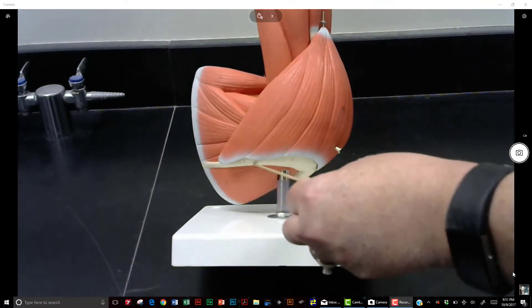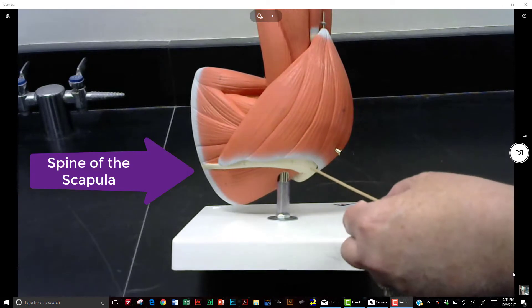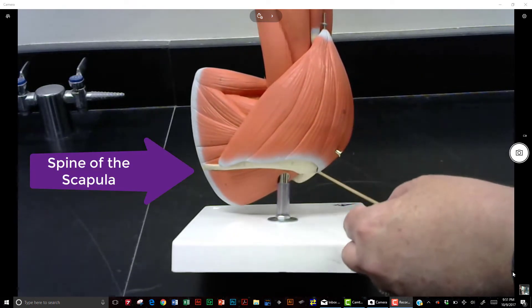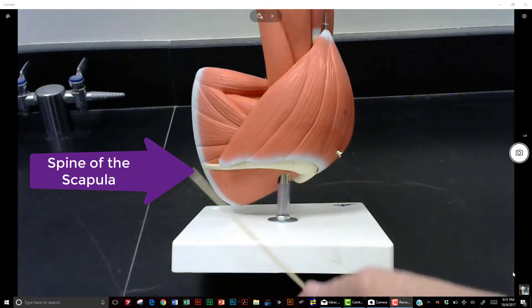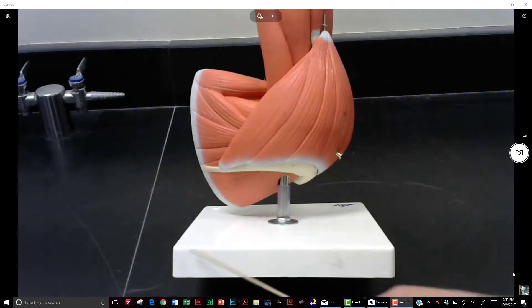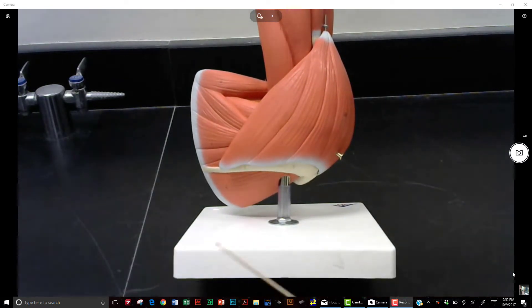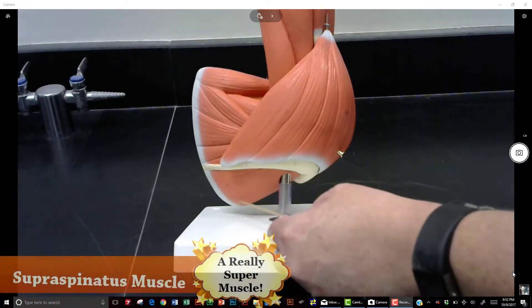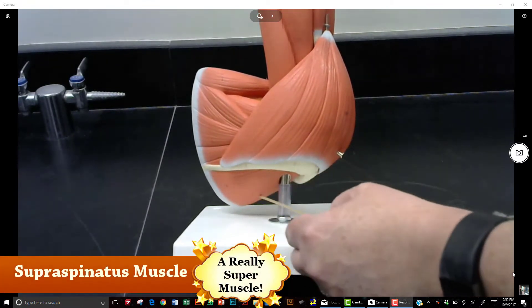This here is the spine of the scapula. When this is on the countertop, the orientation is going to be upside down. So this is going to be your supraspinatus, which is one of your rotator cuff muscles.